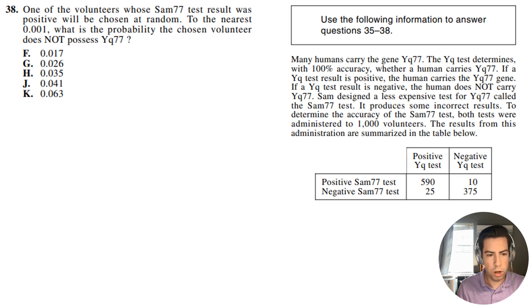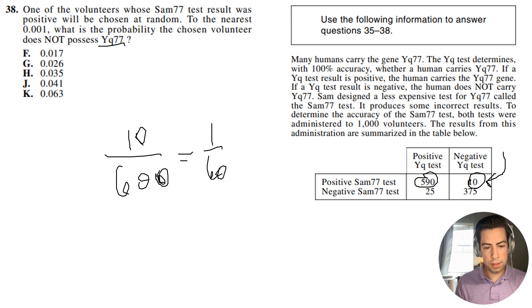All right, last question. So one of the volunteers whose SAM77 test result was positive will be chosen at random. To the nearest 0.001, what is the probability that the chosen volunteer does not possess YQ77? All right guys, so we are looking for a false positive here. So the total number of positive SAM77 tests is going to be 590 plus 10. So 600 is going to be our denominator here. And we want to know the probability that it was a false positive. So a false positive is whenever we get a positive test from the less accurate test. But in reality, they were negative.